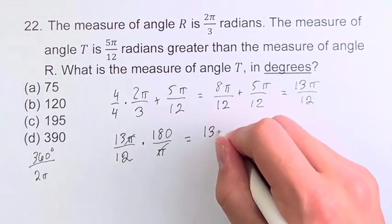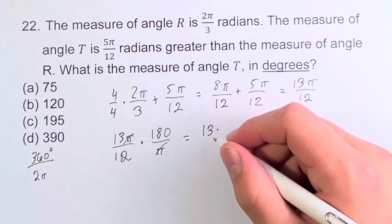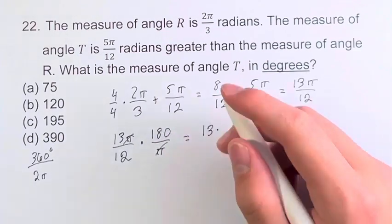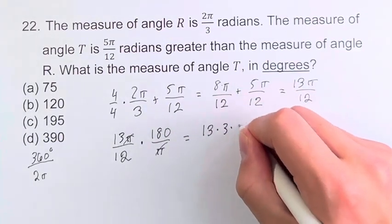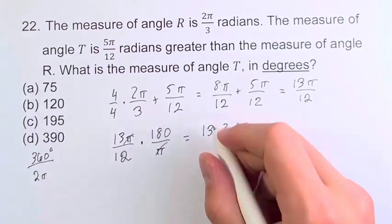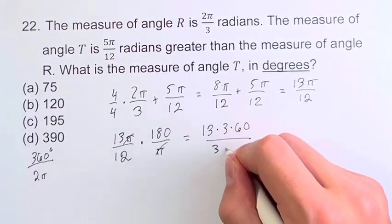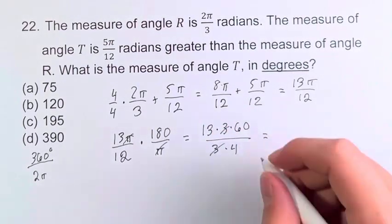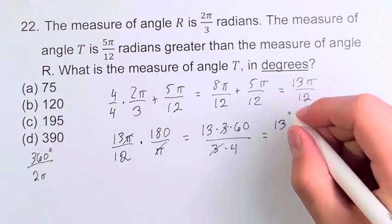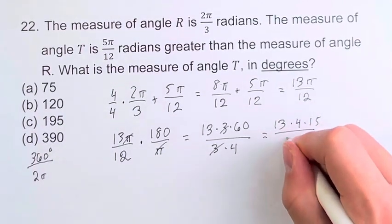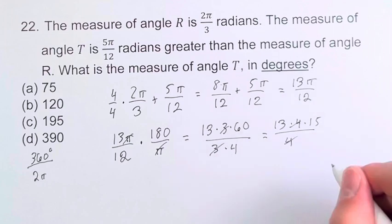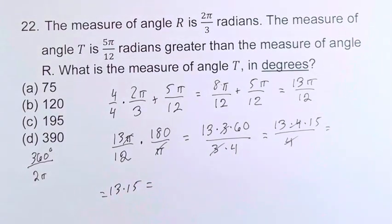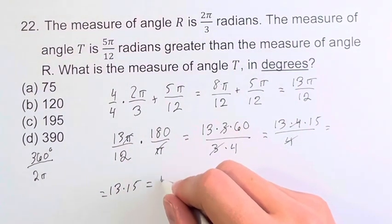We have 13 times 180 divided by 12. We want to simplify this. We can see 180 is divisible by 3—it's 3 times 60. We know that because 3 times 6 is equal to 18. 12 is the same as 3 times 4. So we can do 13 times 60 over 4. 60 is equal to 4 times 15, so then these 4s cancel and we're left at 13 times 15, which you can do out and find is 195.